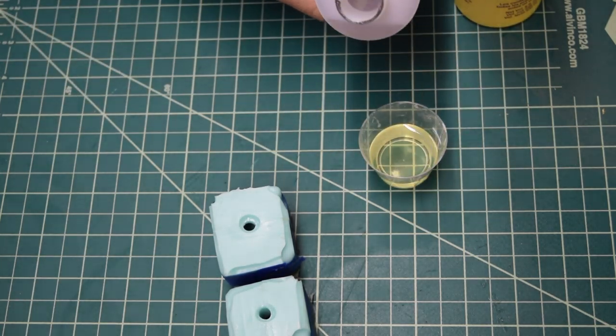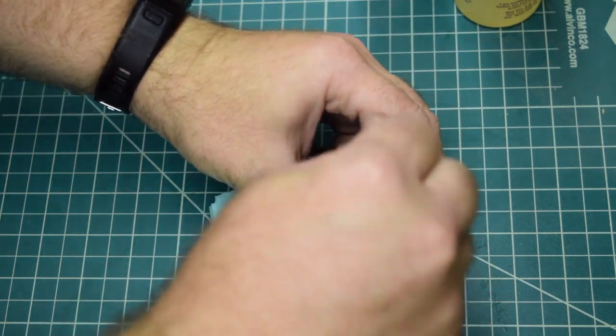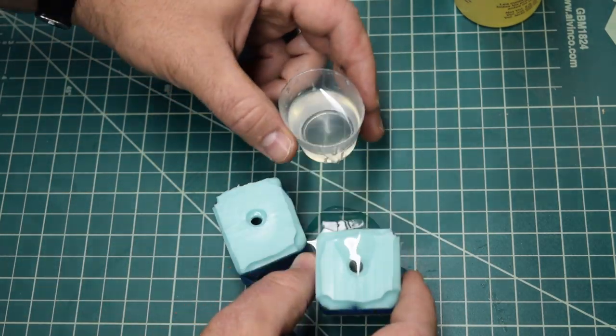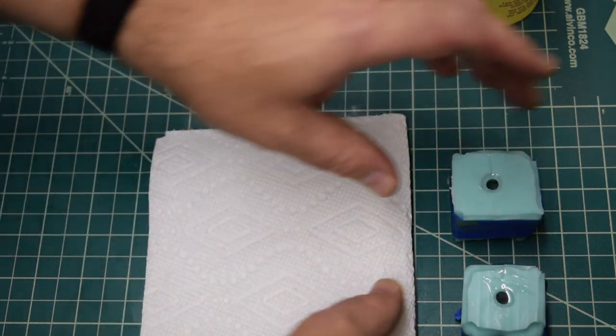The resin is a one-on-one mix and use a graduated mixing cup to get both parts even. Try to pour the resin more carefully than I accomplished here.